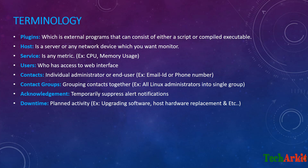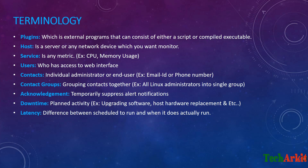Downtime is a planned activity — for example, upgrading software, replacing host hardware, or any hardware upgrades. That is called planned downtime. Latency is the difference between when a check is scheduled to run and when it actually runs. For example, it is scheduled to run at 5 PM but may actually run at 5:10 PM — that difference is the latency.